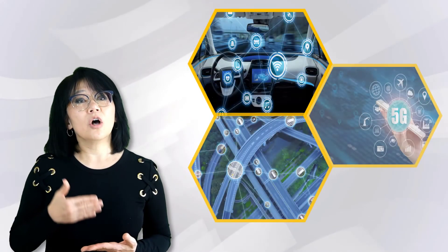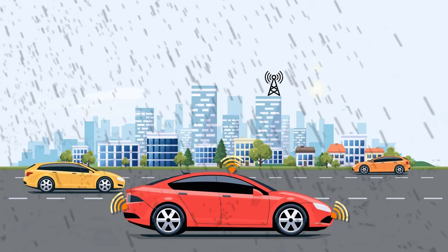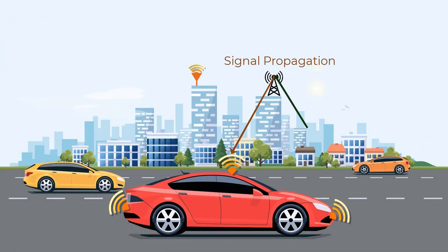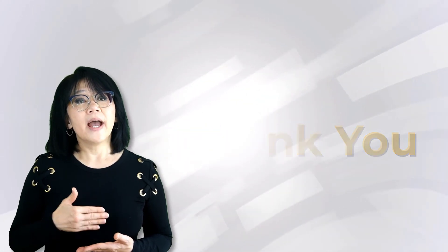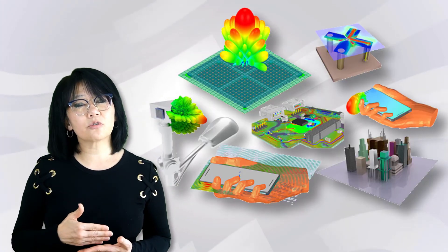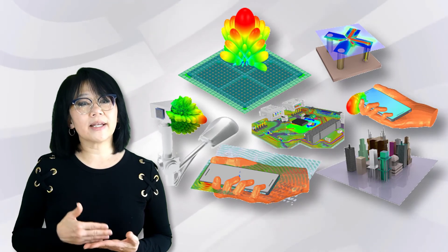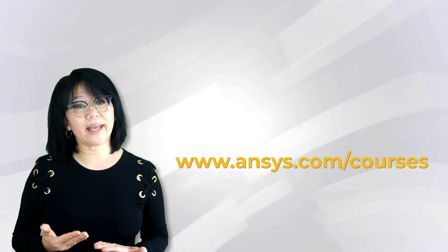For systems like ADAS and V2X, it is critical that simulations be as close to reality as possible. Signal distortions due to fading and multi-path must be considered, as well as signal interference from other wireless systems. Thank you for watching this ANSYS Innovation Course module. If you're interested in other topics such as antennas, ANSYS HFSS, or any of the ANSYS tools, please visit our ANSYS learning channel at ansys.com/courses today.